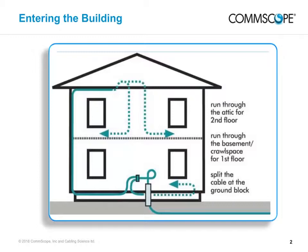For the ground floor, plan your installation so that the cable runs through the crawl space or basement and then up through the floor or an interior wall to the outlets. For the upper floor, run up to and through the attic and then down through the walls to outlets.